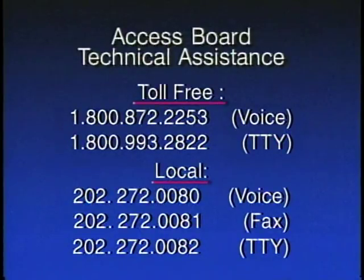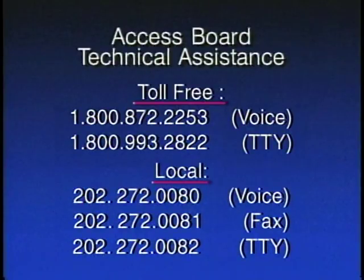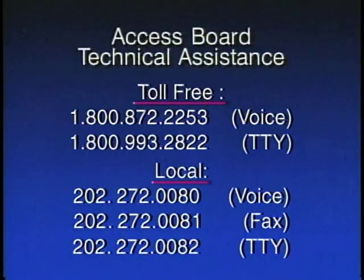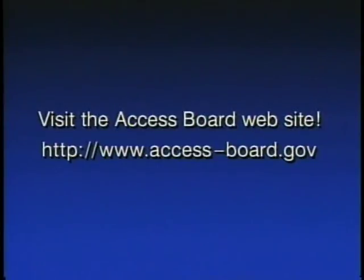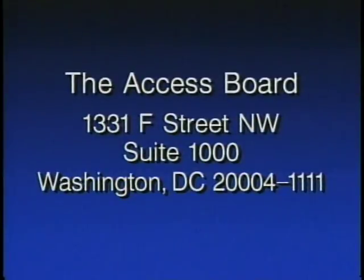For technical assistance from the Access Board: toll-free voice: 1-800-872-2253; toll-free TTY: 800-993-2822; local voice: 202-272-0080; local fax: 202-272-0081; local TTY: 202-272-0082. Visit the Access Board website at www.access-board.gov. You can write to: The Access Board, 1331 F Street NW, Suite 1000, Washington DC 20004-1111.